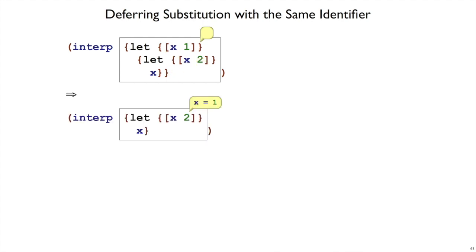When we take our first step, we're going to get rid of the outer let and remember that x should be 1. And then what's going to happen with this let is we're going to remember that x should be 2 in addition to x be 1. So it looks like we have a conflict here. We have conflicting information that x is 2 and x is 1.